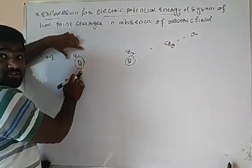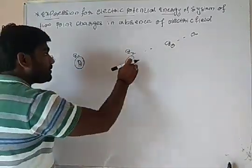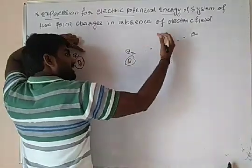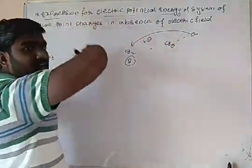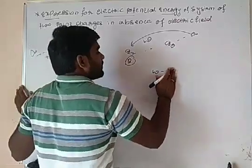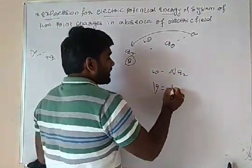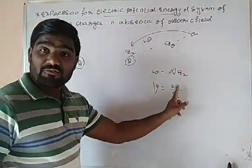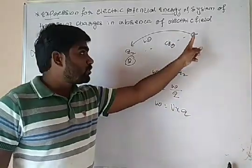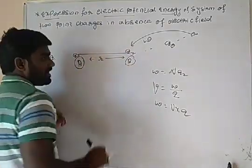Because of the electric field lines of positive charges, we are going to oppose each other. So I must have to work on it. Work done is equal to V into Q2, because this potential is equal to electric potential — as done in the previous video. Work done to bring the charge: work done equals V into Q. This work we have to do on this charge to bring it from infinity to point B. These two charges are separated by a distance of r.